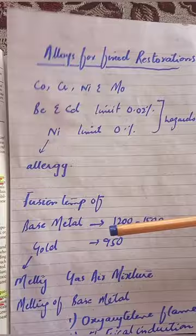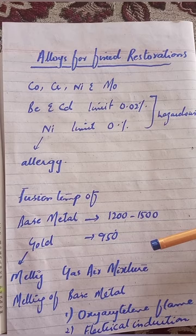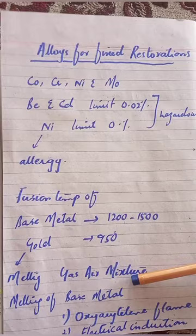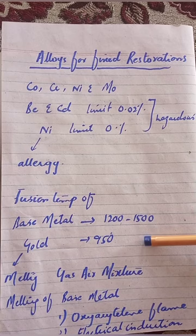The fusion temperature of base metal alloys is 1200–1500°C, compared to gold which is 950°C. When we melt the metal, there are some named processes. The way we melt gold is the gas-air mixture. For base metal alloys, we use two methods: oxy-acetylene flame or electrical induction method.